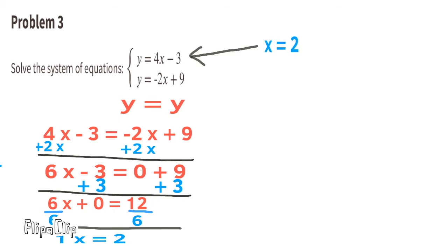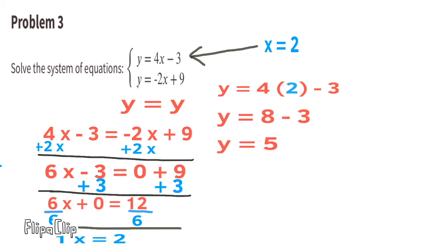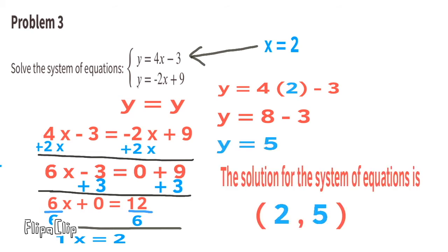Substitute x with 2: y equals 4 times 2 minus 3, which gives y equals 8 minus 3, so y equals 5. The solution for the system of equations is (2, 5).